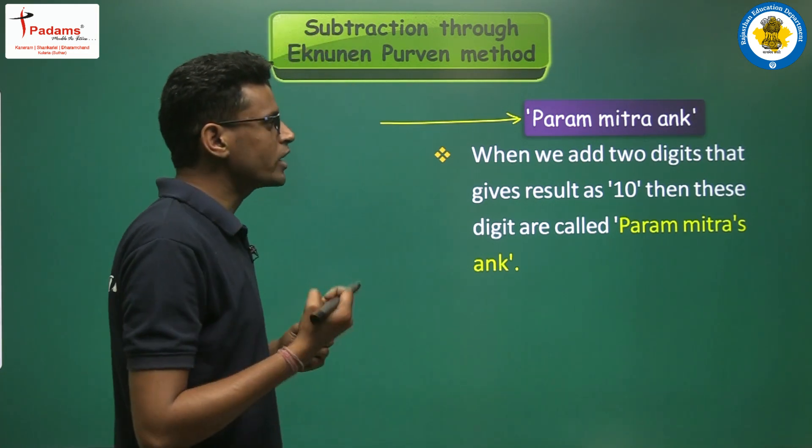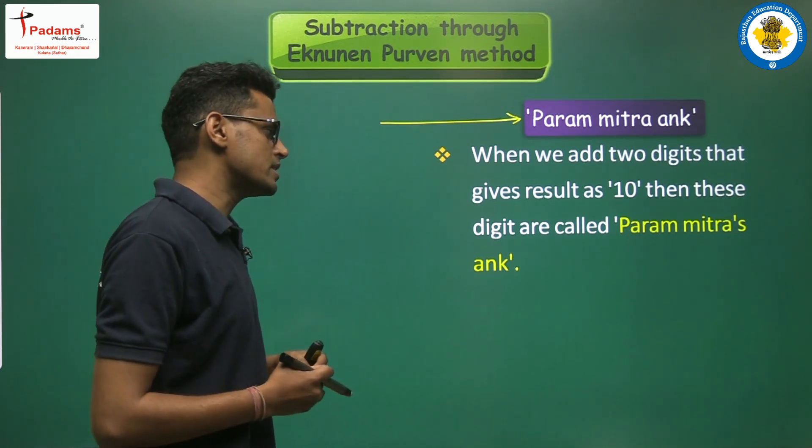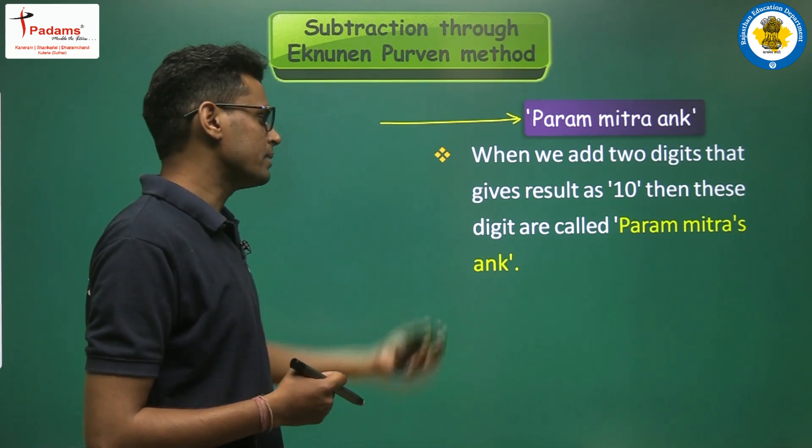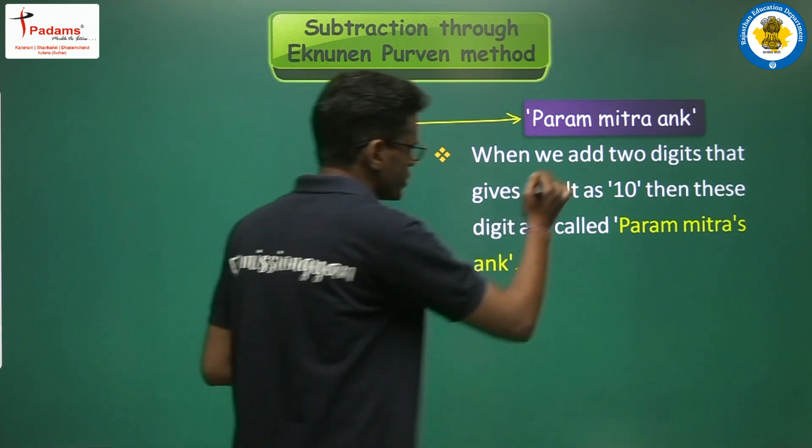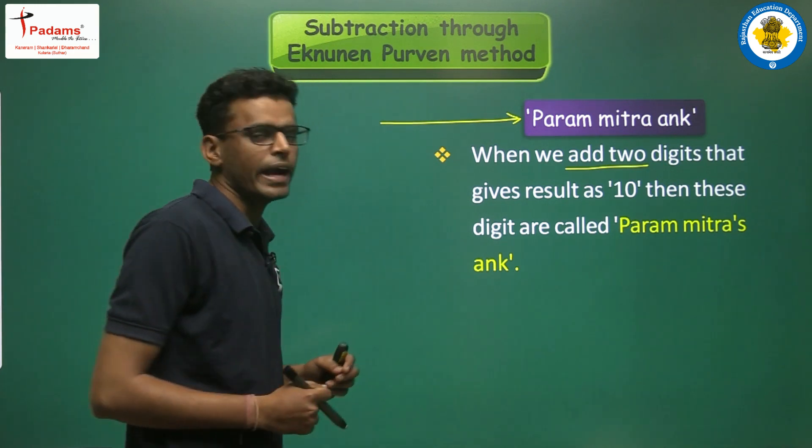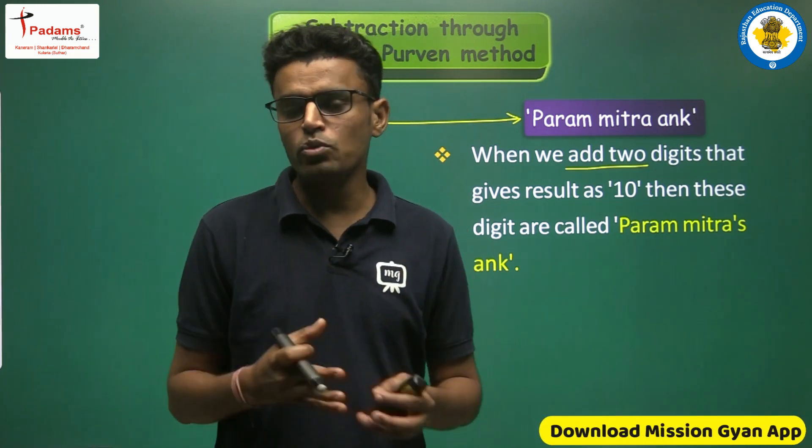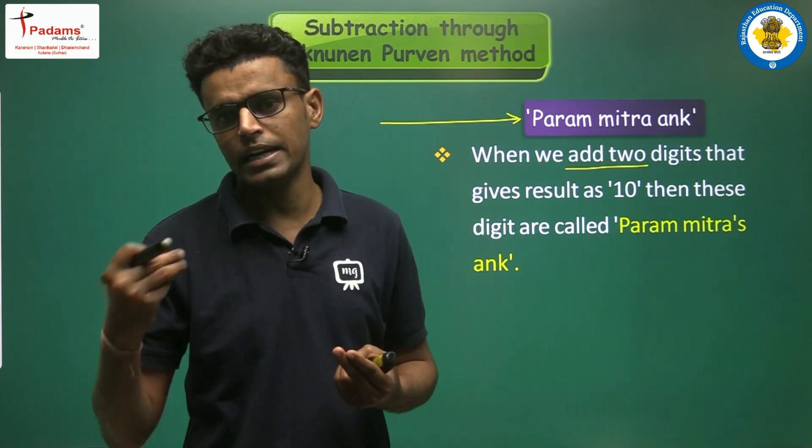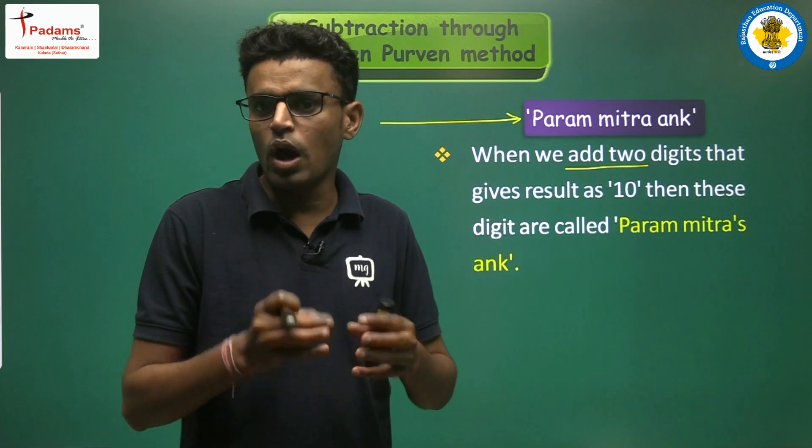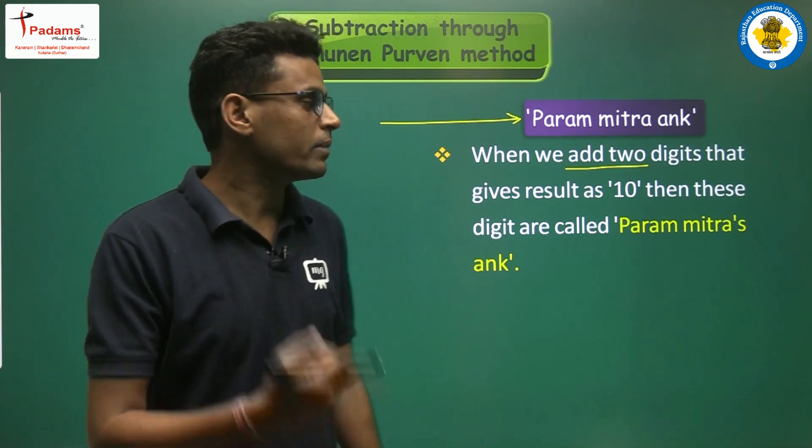So what is paramitra ankh? When we add two digits that give a result of 10, then these digits are called paramitra ankh. We have two digits, we add them, and the answer should be 10. If these rules are followed, then the two digits are paramitra ankh.